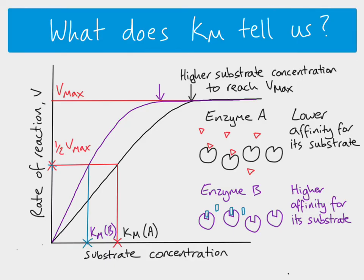This helps us understand how concentrated you need your substrate to be in order to reach Vmax. We can look at these ideas in another video to think about how this works with different enzymes, and the effect of inhibitors on the Vmax and the Km of a particular enzyme. But that's it for now. Thank you.